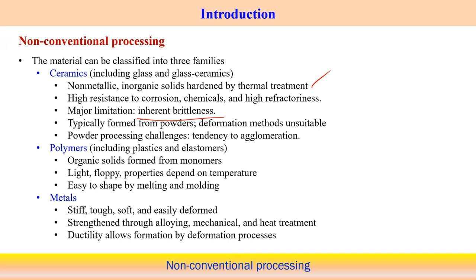Since we start from powders for ceramics, the manufacturing process does not follow any kind of deformation techniques. In metal forming, we apply deformation and then take the shape. But this is not true for ceramics because it cannot perform any deformation mechanism to manufacture ceramic components. There is definitely powder processing. The main challenge for powder processing is agglomeration — the clustering of the powder — which is the main difficulty associated with ceramic material processing.